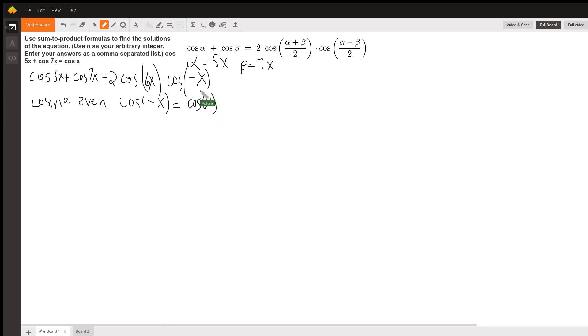So I am going to substitute this in for this. Now, my equation started off cosine of 5x plus cosine of 7x. So here's where we started. So I'm going to replace this with 2 cosine of 6x times cosine of x. And that's supposed to equal this, the cosine of x.